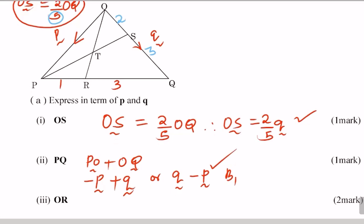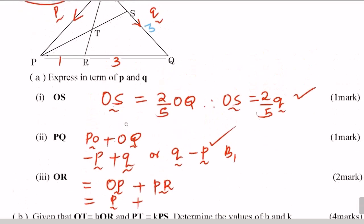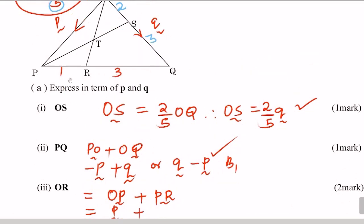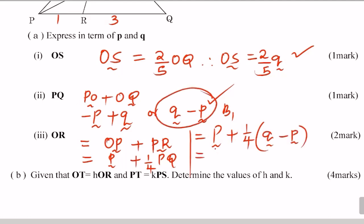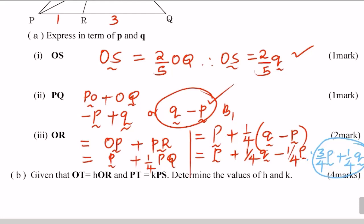Then OR. OR is given by moving from O to P, then P to R. So OR equals OP plus PR. OP equals p. For PR: R divides PQ in the ratio 1:3, so PR equals 1 over (1+3), which is 1/4 of PQ. So OR equals p plus 1/4 PQ. Substituting PQ equals q minus p, we get p plus 1/4(q minus p), which equals p minus 1/4 p plus 1/4 q, simplifying to 3/4 p plus 1/4 q.